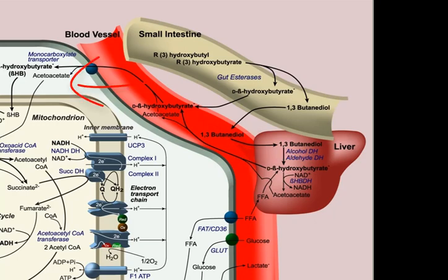monocarboxylite transporters exist in the heart, skeletal muscles, brain, and the kidney that allow beta-hydroxybutyrate into the cell. There are also transporters on the mitochondria that allow beta-hydroxybutyrate into the mitochondria.